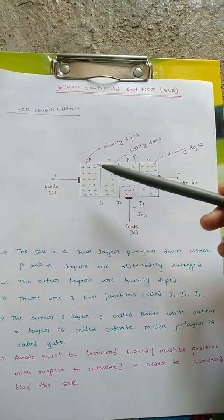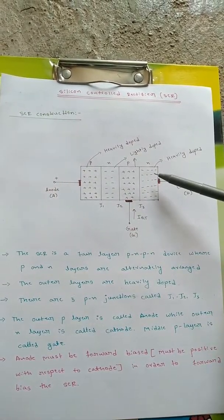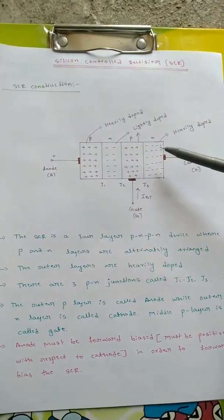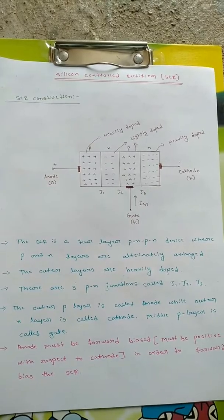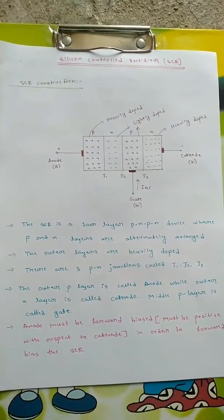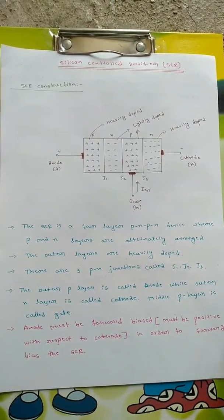The first segment P will be heavily doped and the last segment N will be heavily doped, and the middle regions N-P will be lightly doped. So this is the construction of silicon controlled rectifier.